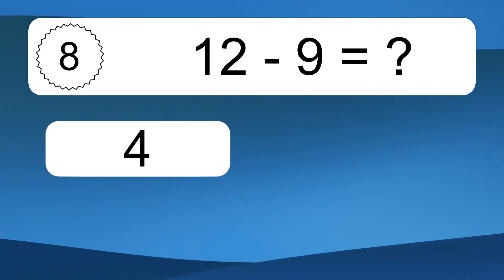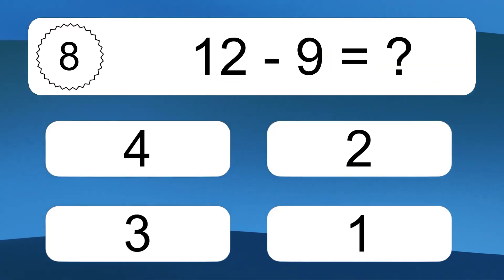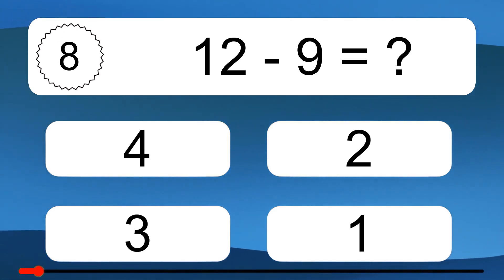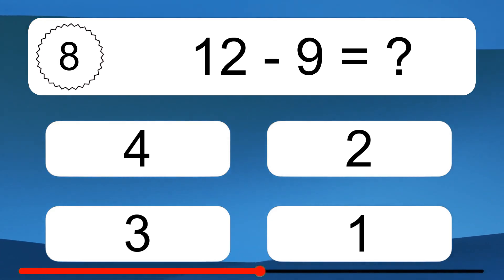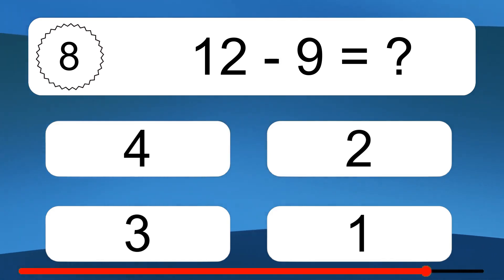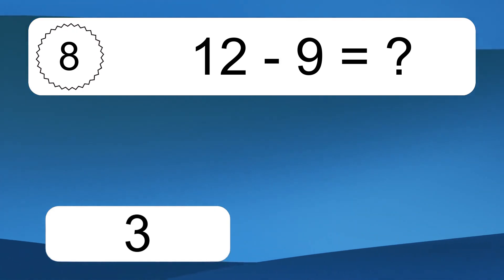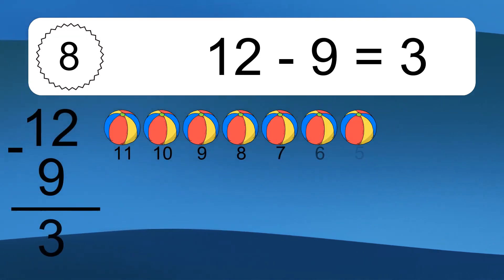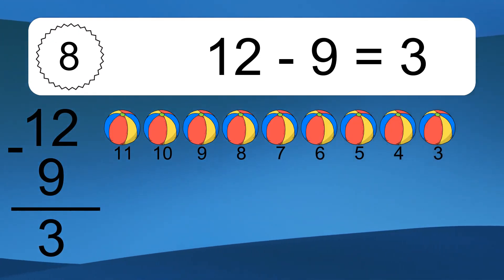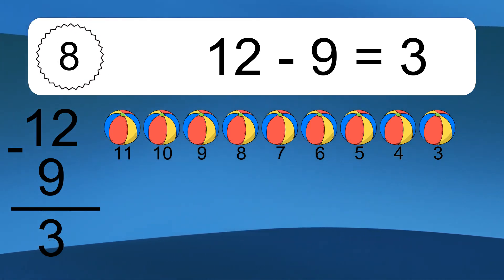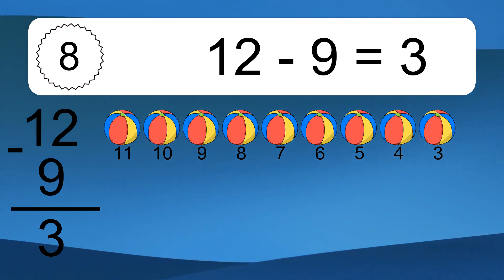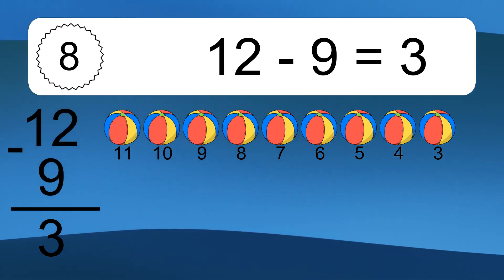12 minus 9 equals what? 12 minus 9 equals 3. Let's count it: 11, 10, 9, 8, 7, 6, 5, 4, 3.